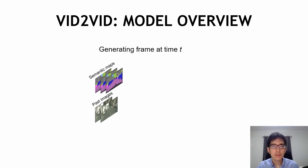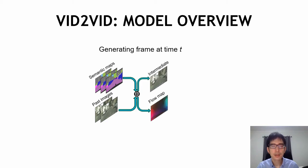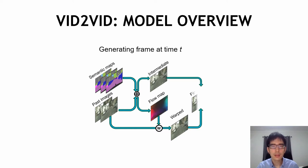To generate these photorealistic videos, we use a GAN, which consists of a generator and a discriminator. The generator, to generate the frame at time t, will take in a series of semantic maps and also the previously generated frames to generate an intermediate frame and an optical flow map. The flow map will be used to warp the previous frame to generate a warped image. This warped image will be combined with the intermediate image to generate the final image. Ideally, the warped image helps reuse existing objects in the previous frame, and we only use the intermediate frame when there are occlusions or new objects. By doing this, we can reduce flickering and ensure temporal consistency in the output video.